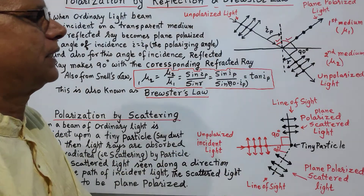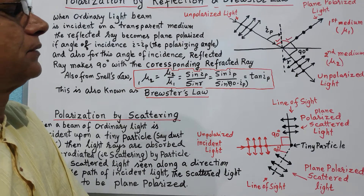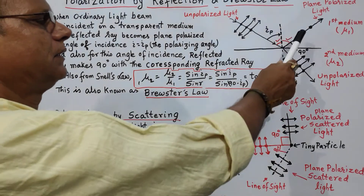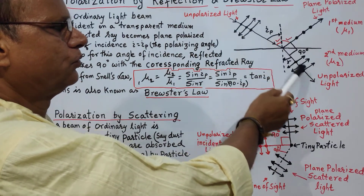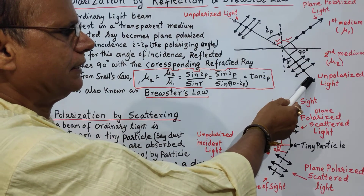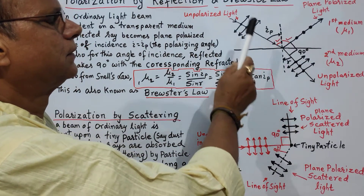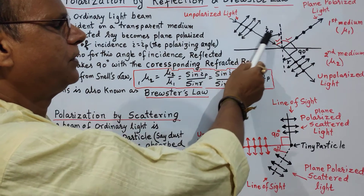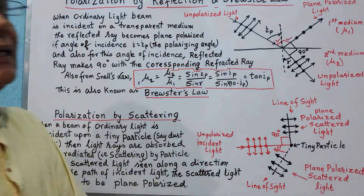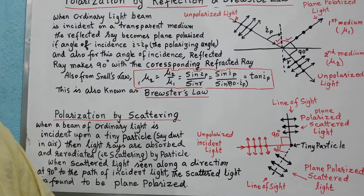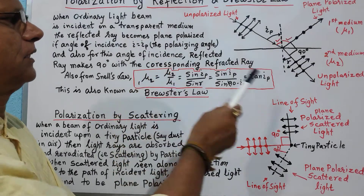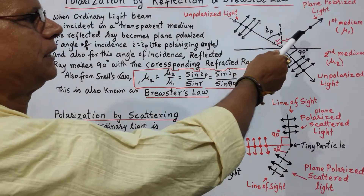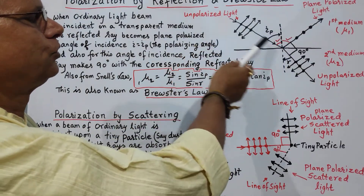One more condition is found: the reflected light is always at 90 degrees with the refracted light when the angle of incidence is equal to the polarizing angle for that medium. Thus we see how we can obtain polarized light due to reflection.